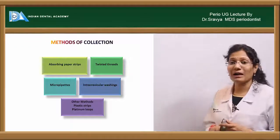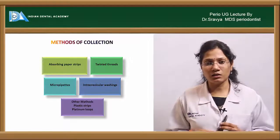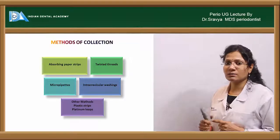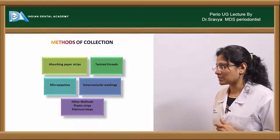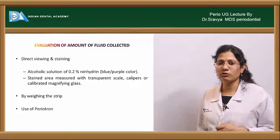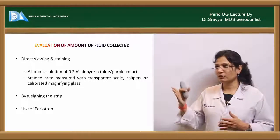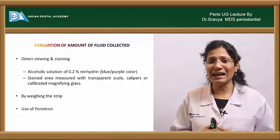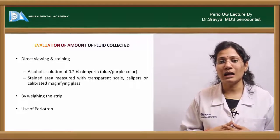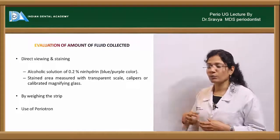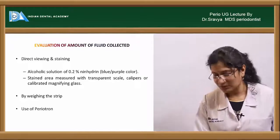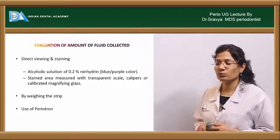Other collection methods include twisted threads, micro pipettes placed at the entrance of the sulcus (using micro-capillary action), intracrevicular washings, paper and plastic strips, and platinum loops. To evaluate the collected GCF, you can use direct viewing and staining — for example, staining with 0.2% aqueous alcoholic ninhydrin solution, which turns the area where GCF is collected blue or purple. The stained area is measured with a transparent scale, vernier calipers, or calibrated magnifying glass.